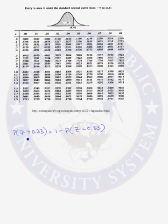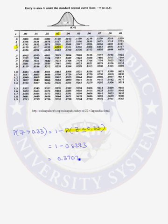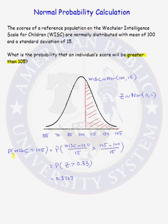Why is that? Because the probability of an event is equal to 1 minus the probability of its complement. This probability can be found in the table. We go to a Z score of 0.33 and find the area to the left of 0.33 is 0.6293. So we have 1 minus 0.6293, or a little more than 37% for our probability. The probability that an individual's WISC score will be greater than 105, when the distribution is normally distributed with mean 100 and standard deviation 15, is equal to a little more than 37%.